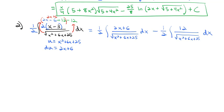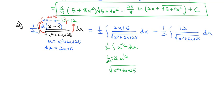Splitting on the minus sign, we get two integrals: (1/2) times ∫(2x + 6)/√(x² + 6x + 25) dx, minus (1/2) times ∫12/√(x² + 6x + 25) dx. The left integral we can solve using u-substitution — it becomes (1/2)∫u^(−1/2) du, which gives u^(1/2), or √(x² + 6x + 25).